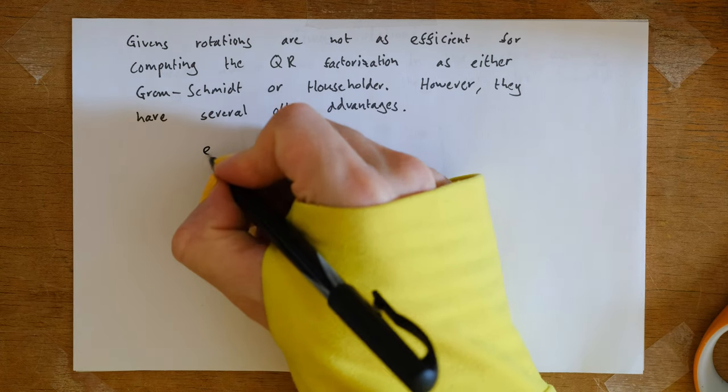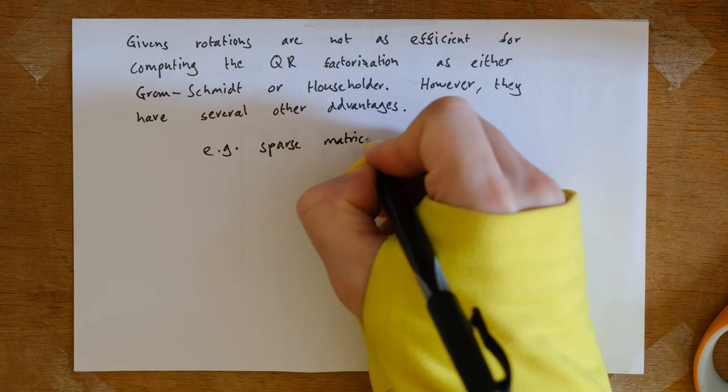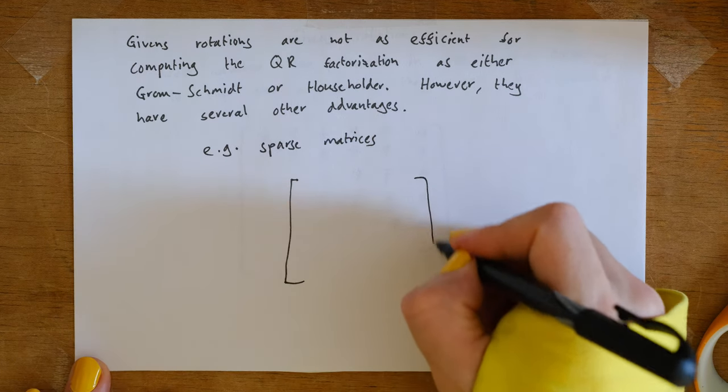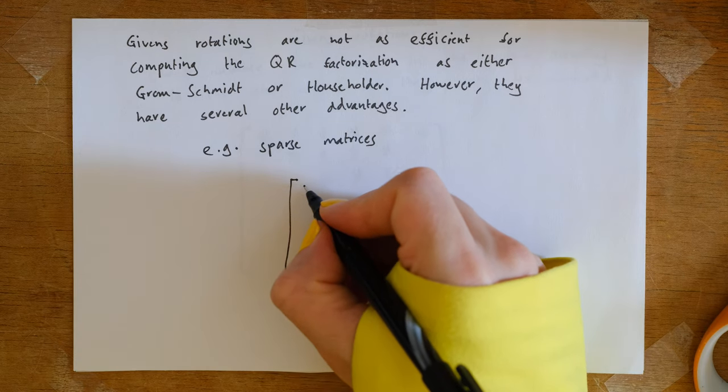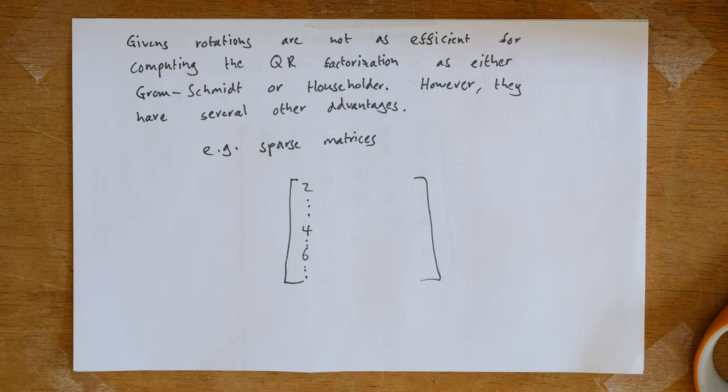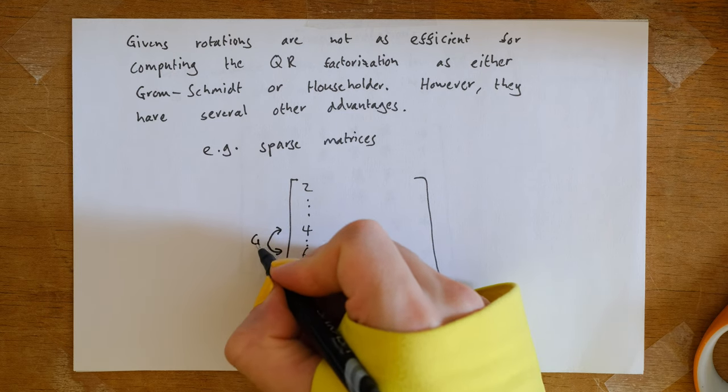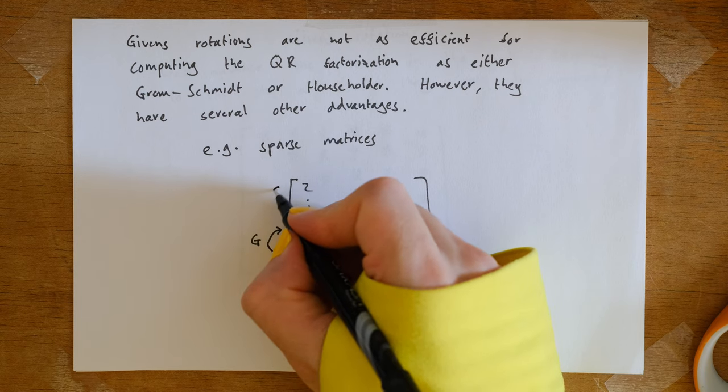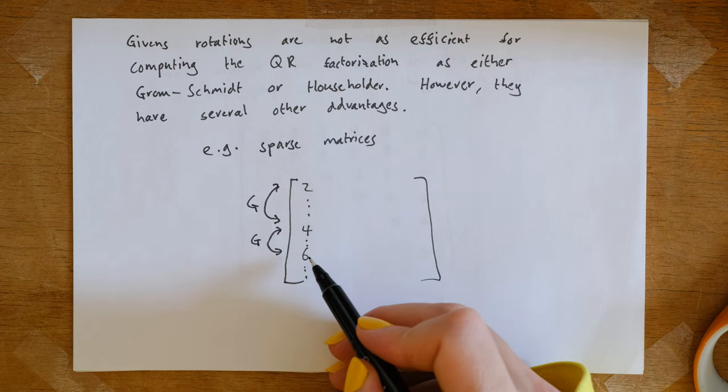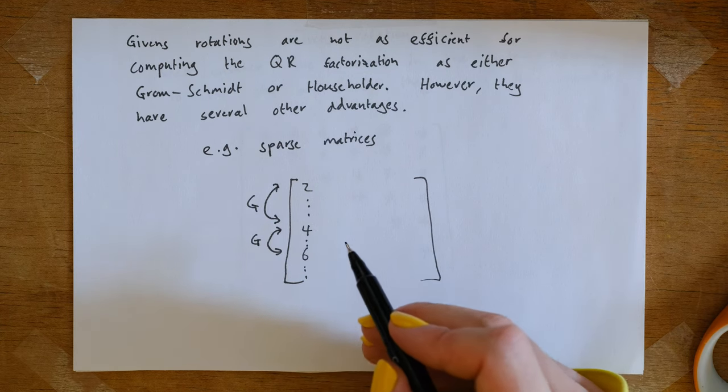One advantage is if we look at sparse matrices. Suppose that we look at a matrix where there are only a few terms in the first column. In this case, we could apply Givens rotations that would target the specific non-zero entries. If there are only two non-zero terms, then we could eliminate them just using two Givens rotations, and that would be a very efficient operation.